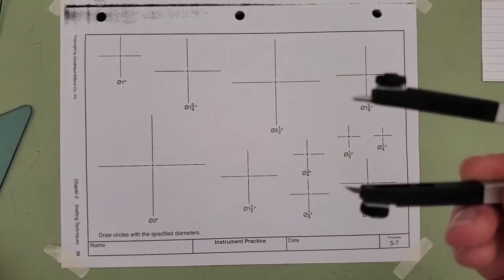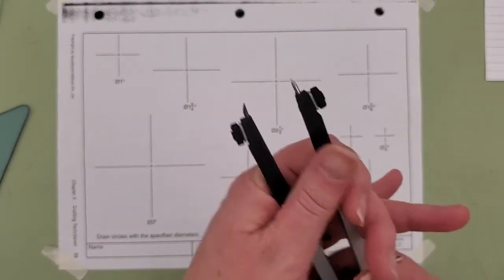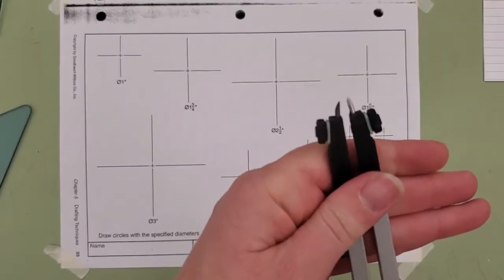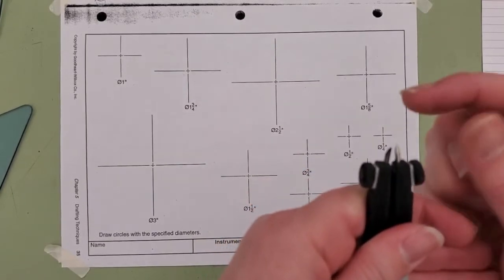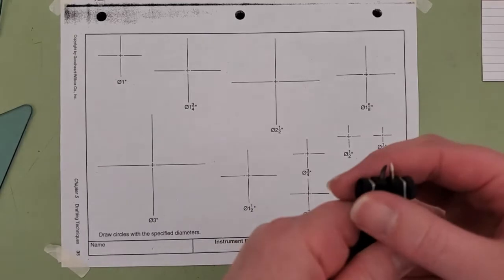Also, when you close the legs on this, you want the very tip of your compass to be slightly longer than where your graphite is.